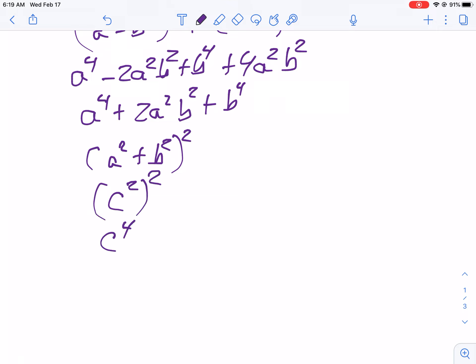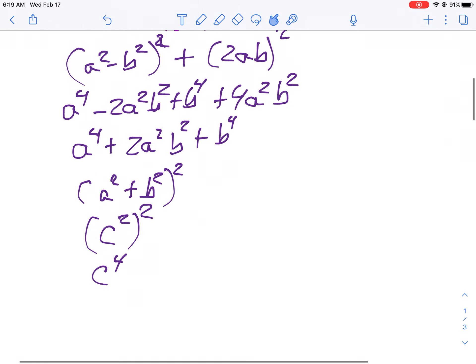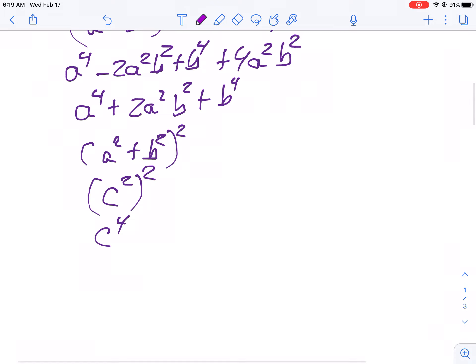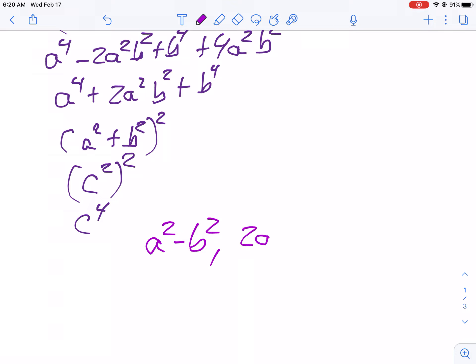So I have a Pythagorean triple here. My Pythagorean triple terms are A squared minus B squared. My second term is going to be 2AB. And my third term is going to be C squared. And that is a Pythagorean triple. And that's what we do on that problem.